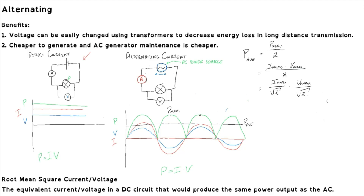We use the terms I max over root two and V max over root two to define the reading we would get in this circuit. We call this the root mean square value — it is not an average value, because the average value would be zero. The RMS current is calculated by taking the maximum current and dividing it by the square root of two. Similarly, the RMS voltage, V rms, equals V max divided by the square root of two.